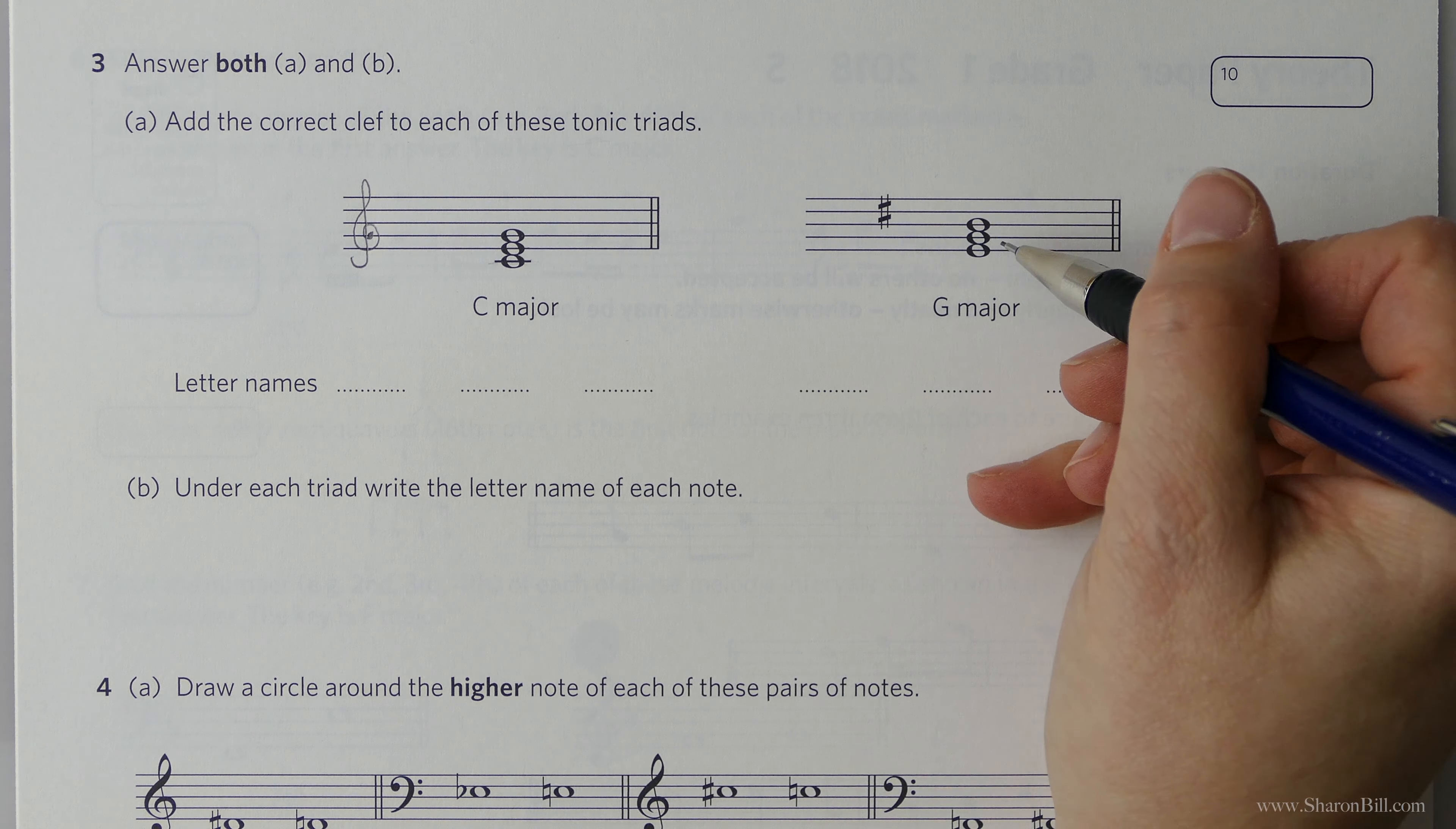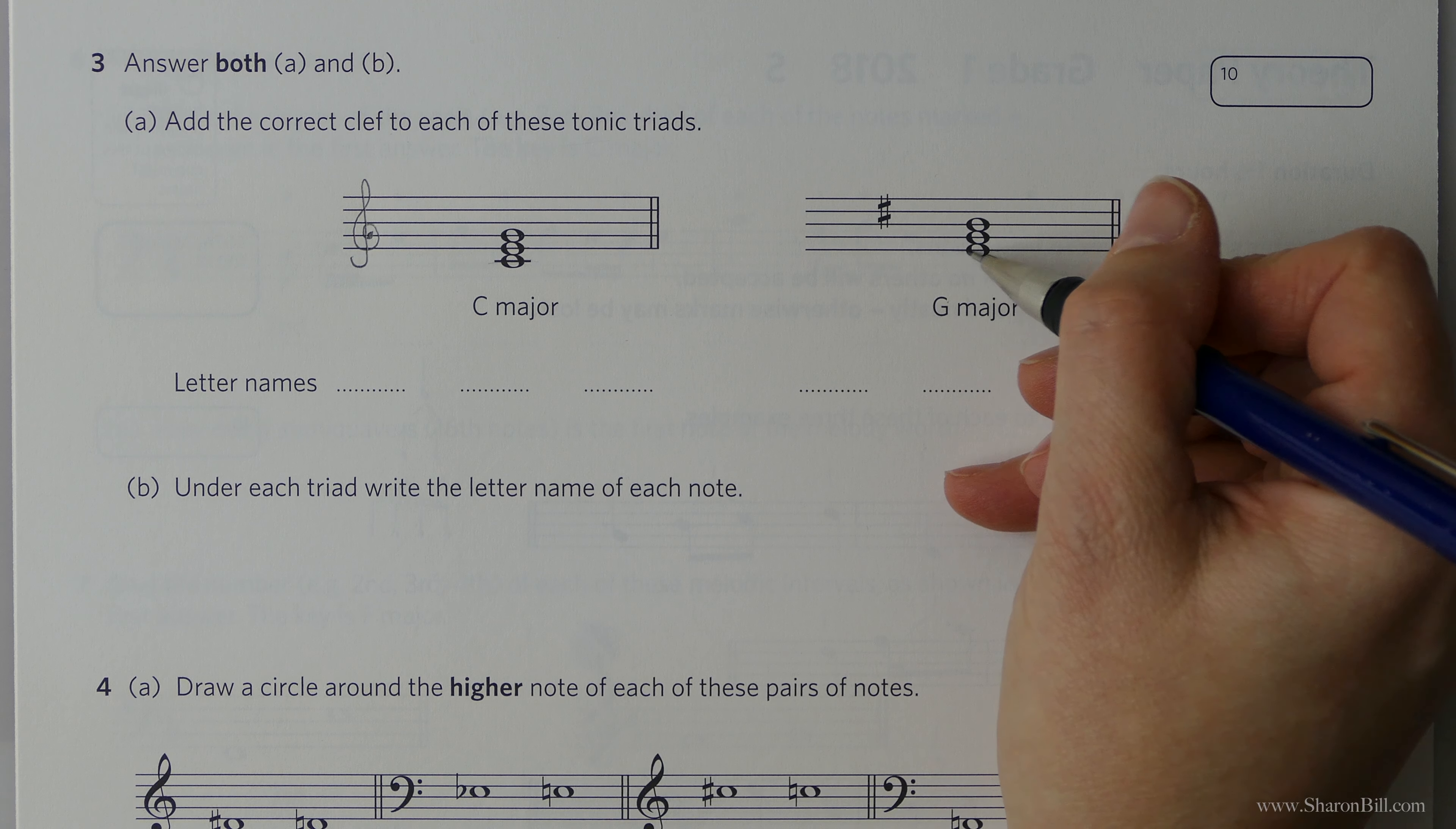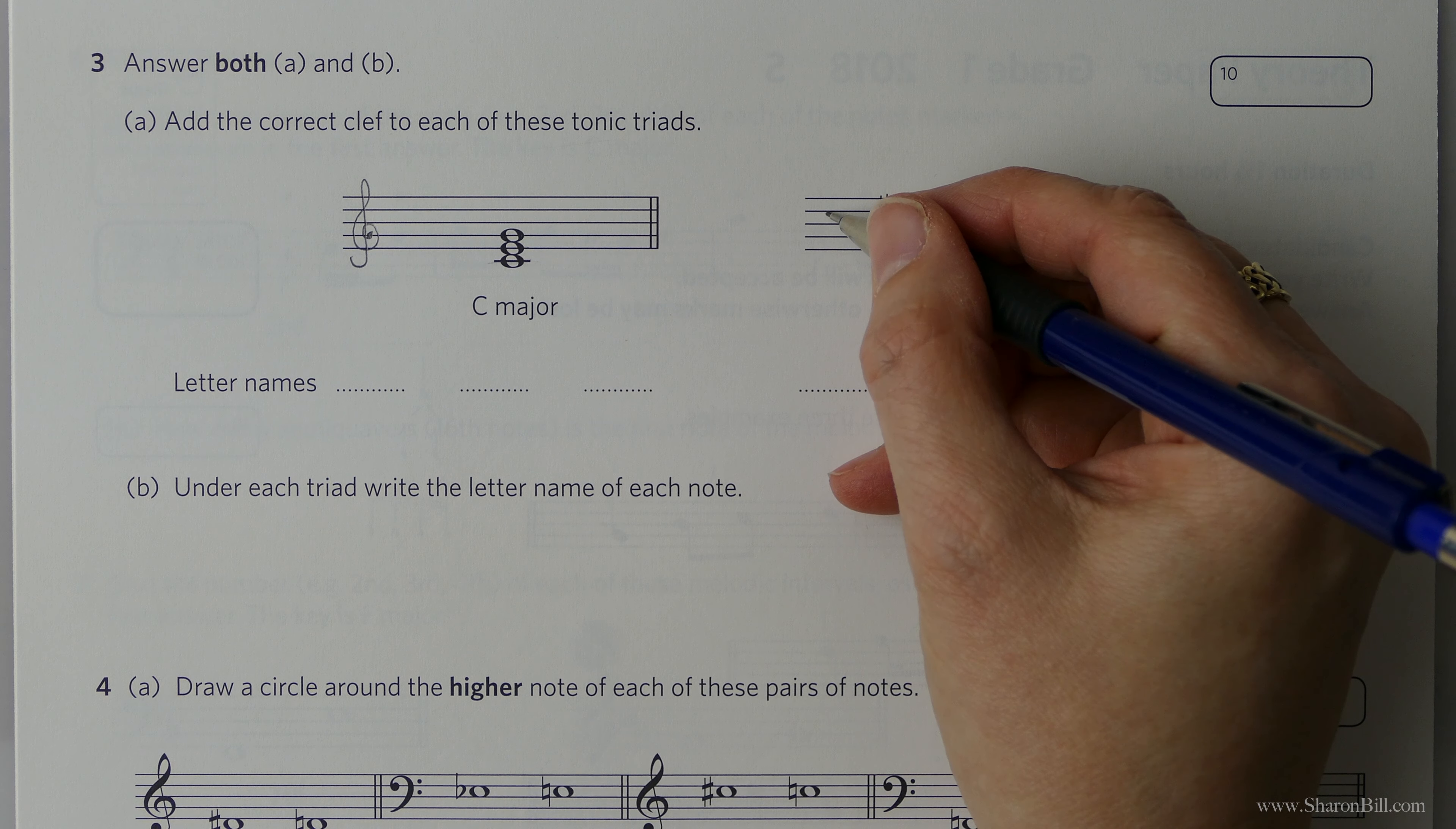Let's look at this next one. So of course G major, the tonic for the tonic triad at the base of the chord, the root of the chord must be G. And for that to be the case, this needs to be the bass clef. We need a G, B, D. And we know that in the bass clef, good boys deserve football always or green buses drive fast always, something like that. And so we know this is bass clef.